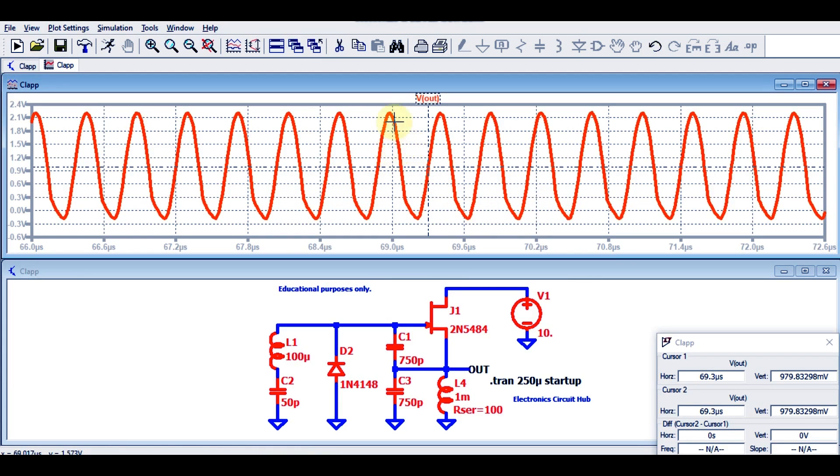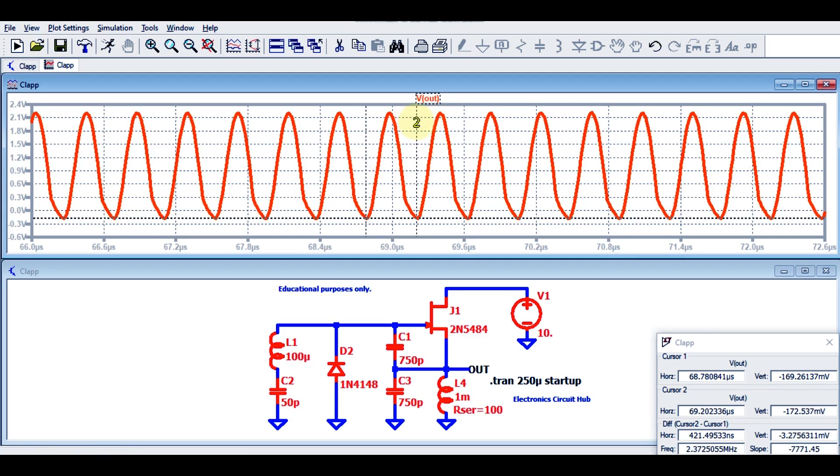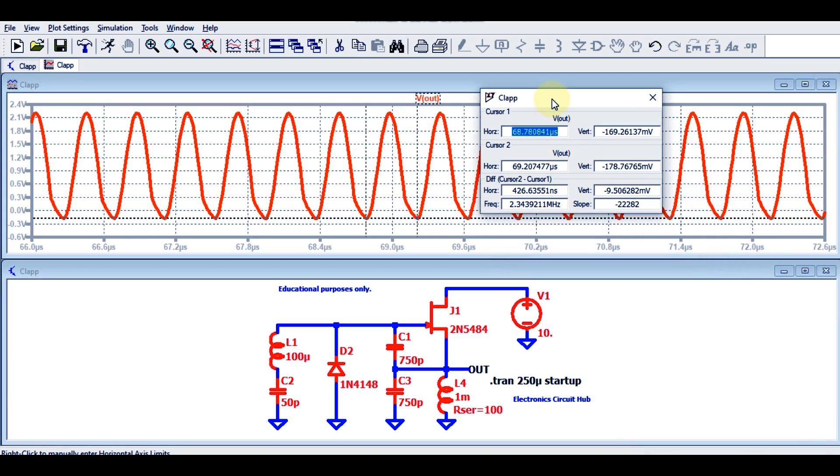Let me use cursor one—let me put it here. Let me use another cursor, which is cursor 2. Now you can check the frequency for this Clapp oscillator is around 2.3 megahertz.